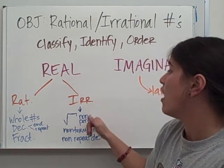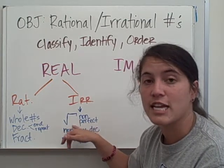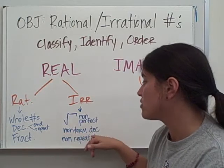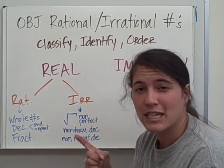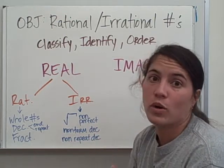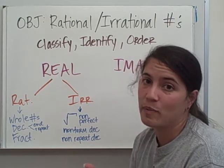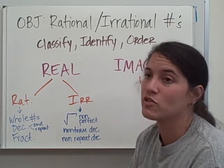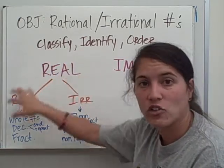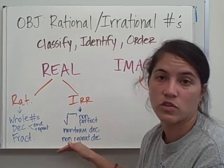Irrational numbers are the non-perfect squares. If you're taking the square root of a non-perfect square, that is an irrational number. Also, if it's a decimal that doesn't repeat and doesn't end — meaning it goes on forever, like 0.12345678910111213... — that is a non-repeating, non-ending decimal, so that would be an irrational number. Make sure you get this classifying chart down so you know which numbers fall into rational and which fall into irrational.